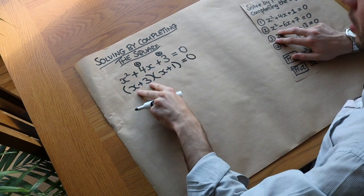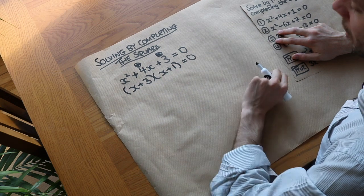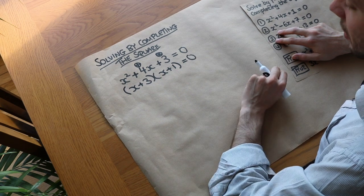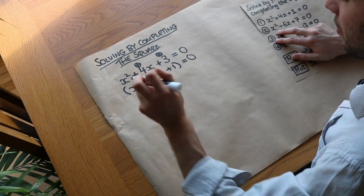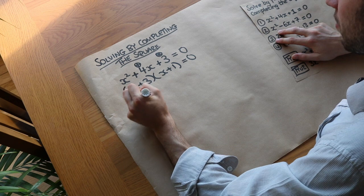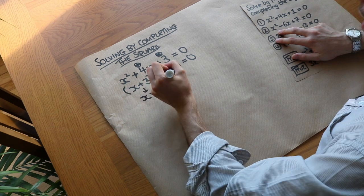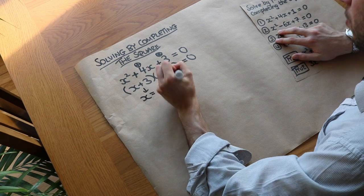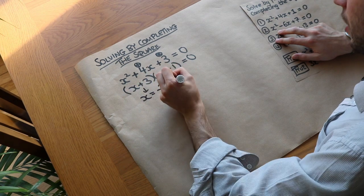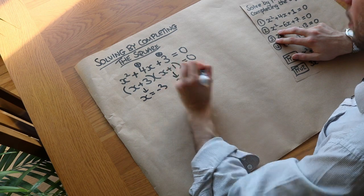We've got the product of two numbers equal to 0, so one of them has to be 0. If x plus 3 equals 0 then x equals minus 3, and if x plus 1 equals 0 then x equals minus 1.